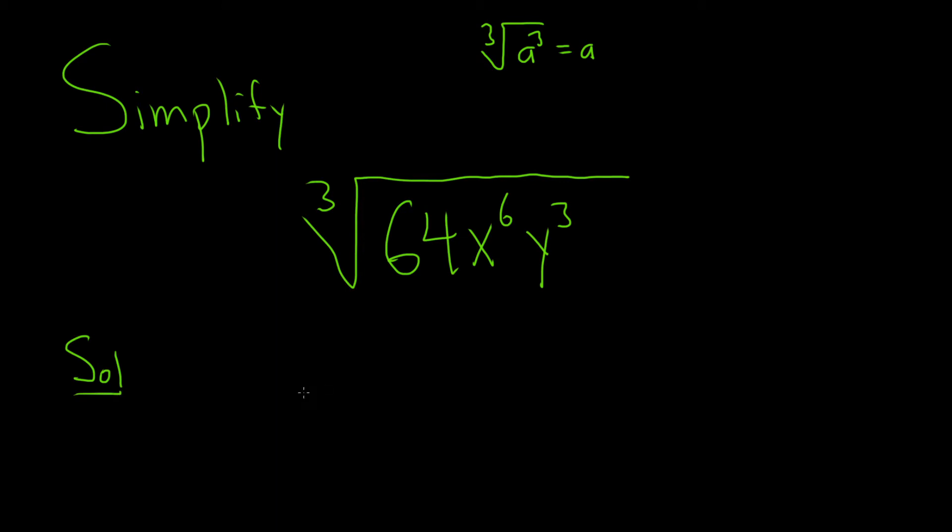Solution. This is the cube root of... So 64 is going to be 4 cubed. X to the 6. How can you write that as something cubed? Well, I think we can do this. X squared cubed.